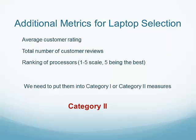Now, I want you to think about the ranking of the processes. In this case, we use 5 being the best. What if we use 1 being the best and 5 being the worst? Would you still group this particular measure, ranking of processes, as a Category 2 measure?